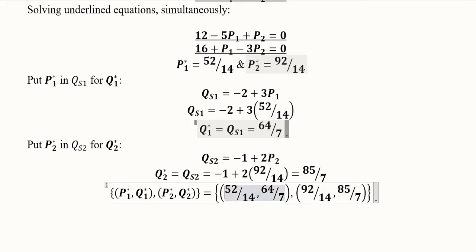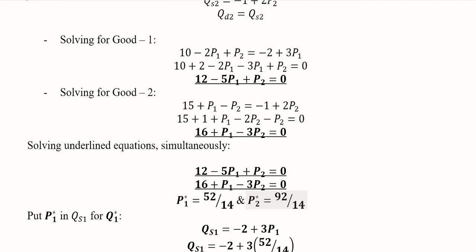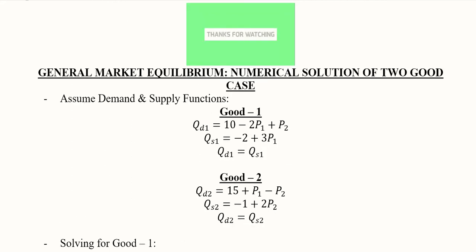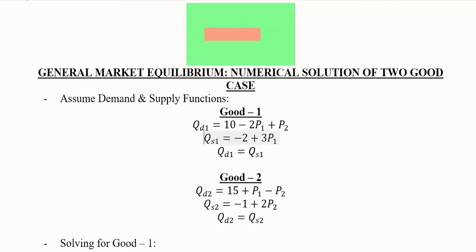We can now write the results as a solution set: p1* and q1* are the equilibrium values for good one, and p2* and q2* are the equilibrium values for good two. In this way we have found the general equilibrium in a market with two goods — these were the steps to find the equilibrium prices and quantities for both goods.